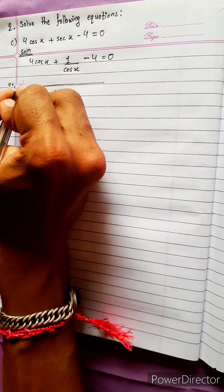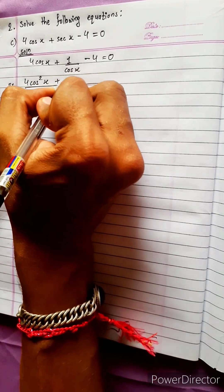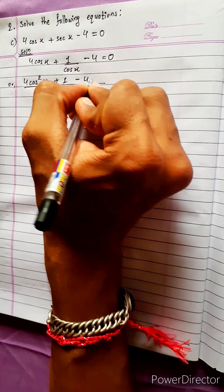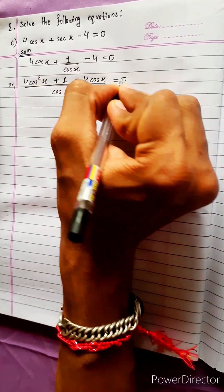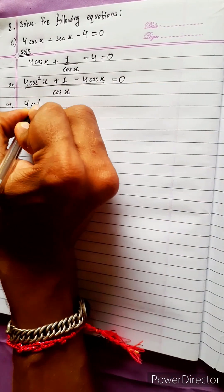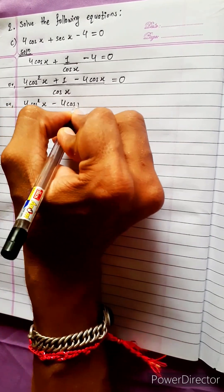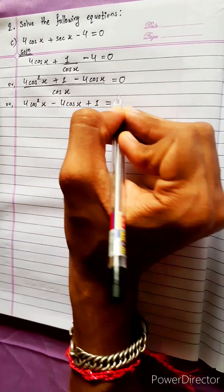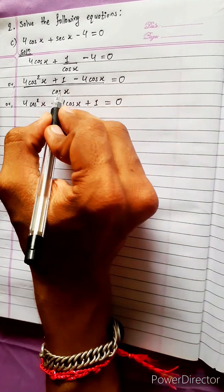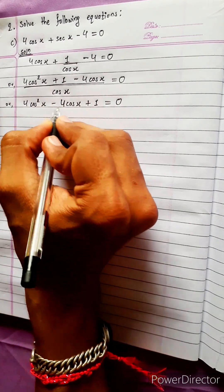After multiplying both sides by cos x, we get 4cos²x - 4cos x + 1 = 0. This sets up a quadratic expression in cos x.